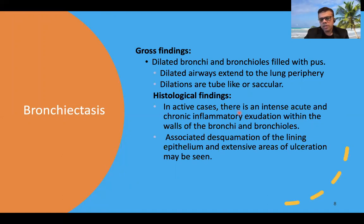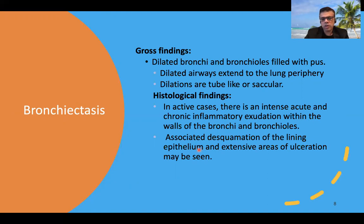Histological findings include intense acute and chronic inflammatory exudates within the walls of bronchi and bronchioles. Associated desquamation of the lining epithelium is seen, which may be partially or completely peeled off. Areas of ulceration lined by acute inflammatory exudate may also be seen.